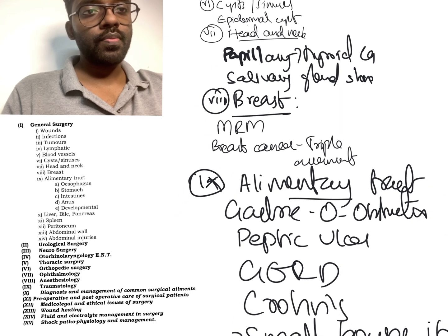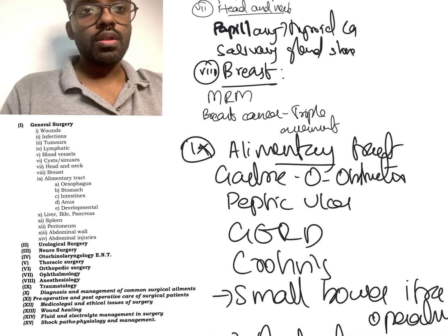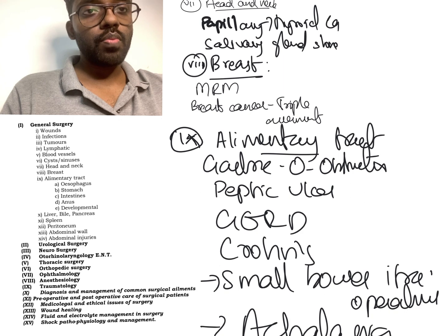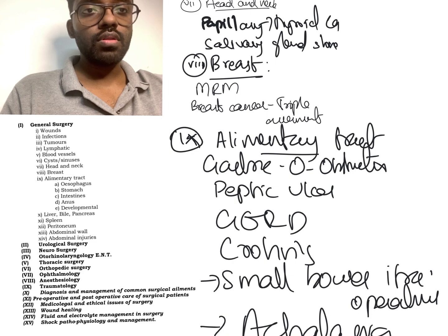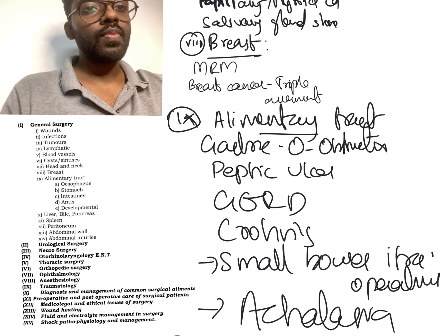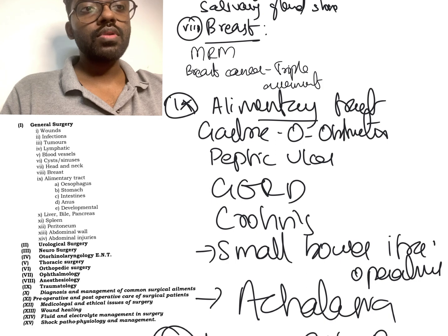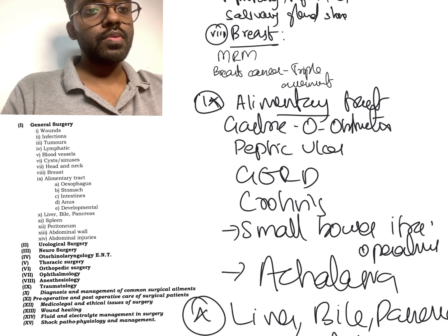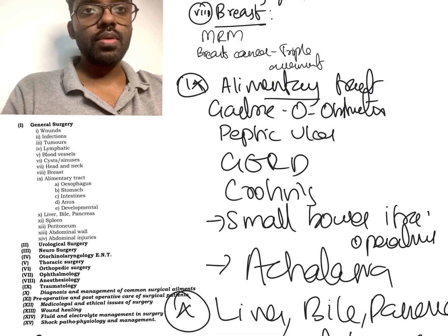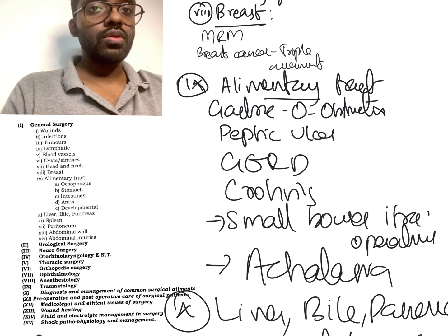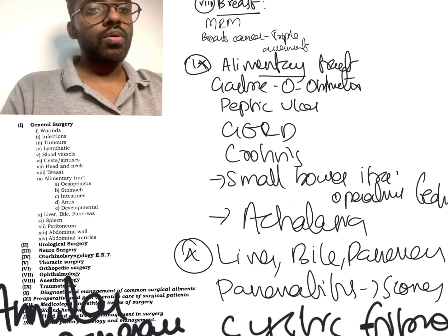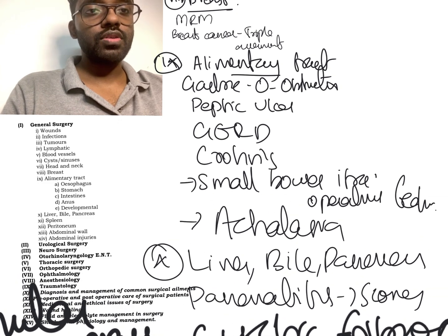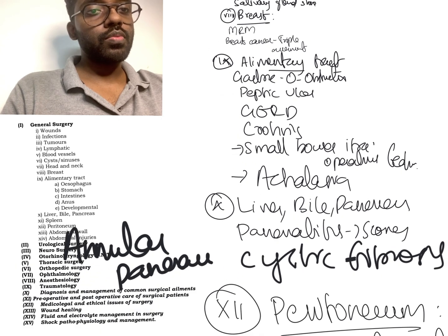The ninth topic, alimentary tract, is one of the biggest topics in general surgery and the majority of questions came from this region. They asked about gastric outlet obstruction, peptic ulcer, and GERD, which is a common theme. Crohn's disease was also asked this time — usually it appears in Part 1 (Medicine), but it was included here. They also asked about small bowel intraoperative features, and achalasia was mentioned as well.